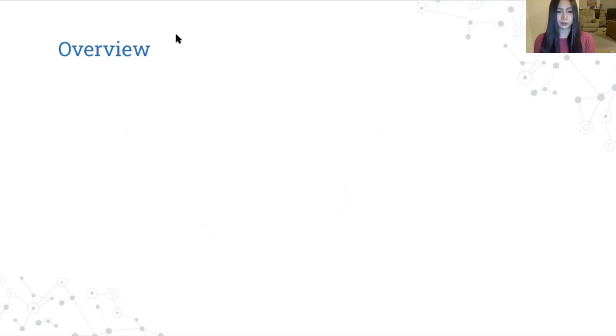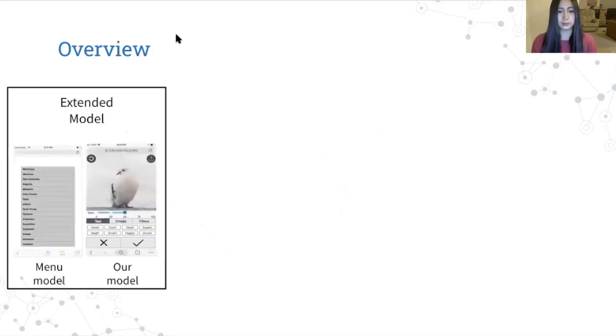Here's a high-level overview of our approach. First, we need a model, so we extended Lee et al's model that predicts menu task performance to predict the task performance metric, which will be defined later, for various types of interactions on 2D mobile interfaces.